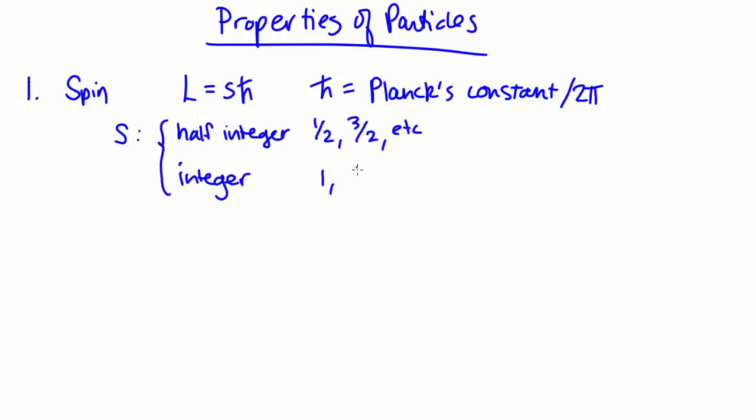This is as opposed to continuous quantities where you could have any value. So this spin quantum number is a quantum property of a particle.